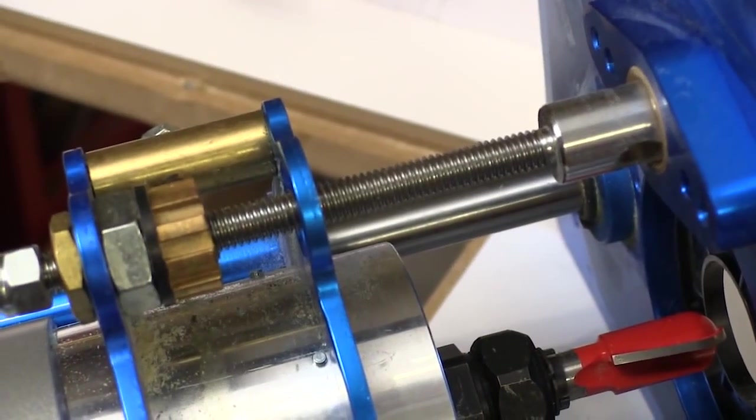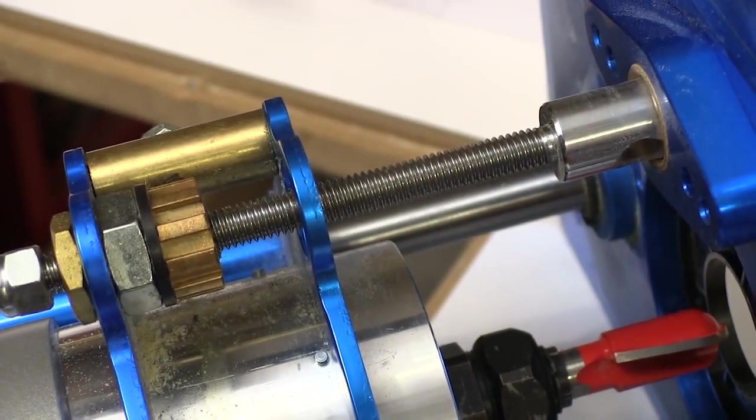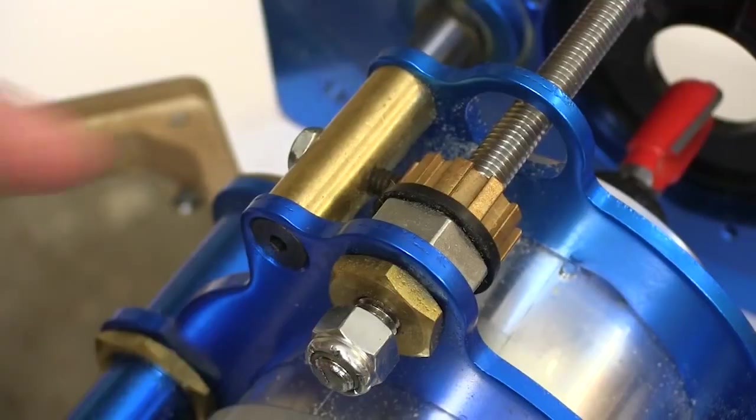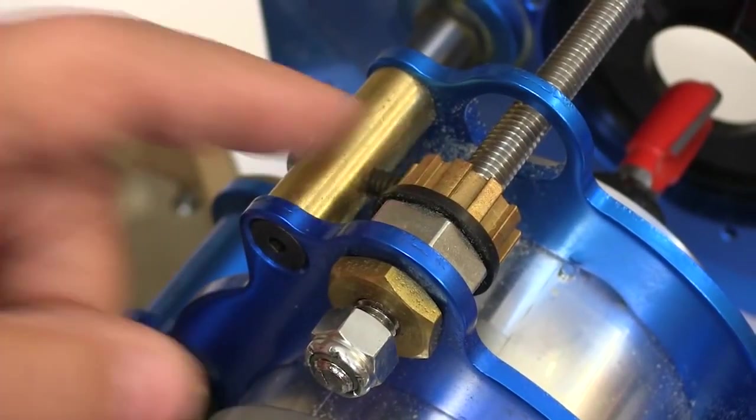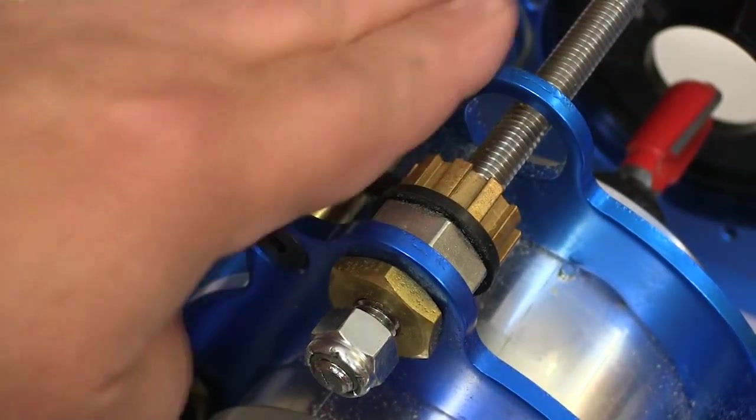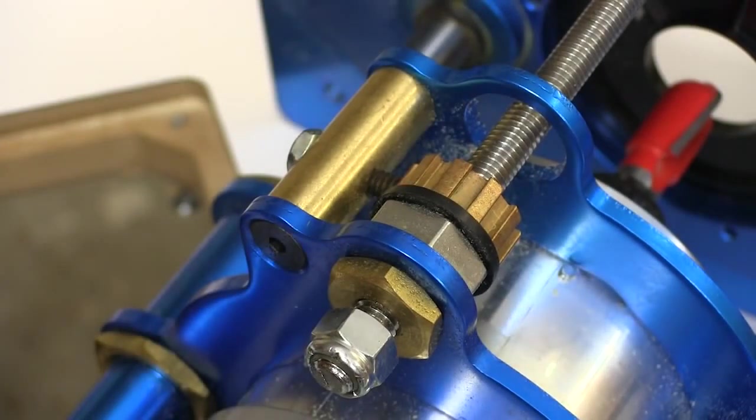This fine threaded shaft is what moves the router up and down when you turn the handle. This mechanism lets you adjust how much tension there is on the screw and that works like a brake so the router doesn't move up or down unexpectedly.